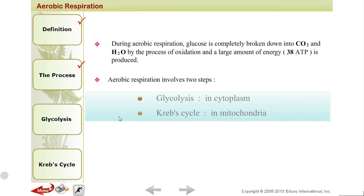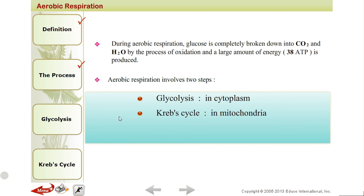Aerobic respiration has two steps. First is glycolysis, which takes place in the cytoplasm. Second is the Krebs cycle, which takes place in the mitochondria.